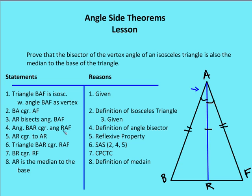AR is congruent to itself, so triangle BAR is congruent to triangle FAR by side-angle-side. Since those triangles are congruent, BR is congruent to RF by corresponding parts of congruent triangles are congruent. Therefore AR is the median to the base, because by definition a median is the segment from the vertex that bisects the opposite side into two equal halves.